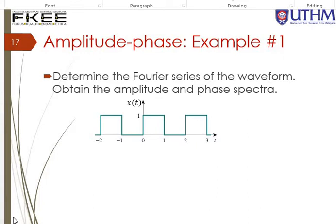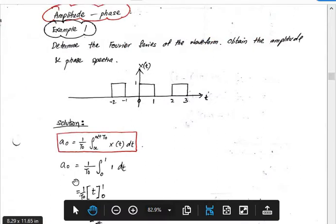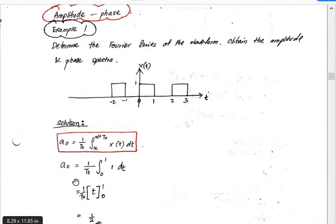Now look at the example of the amplitude-phase Fourier series. Determine the Fourier series of the waveform and obtain the amplitude and phase spectra of the signal x(t). The signal x(t) is from 0 to 1 with an amplitude of 1, and T₀ is equal to 2. I'll share handwritten notes here to explain, since this process is fairly long.